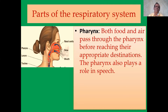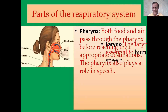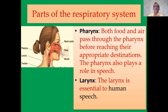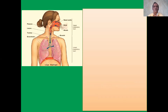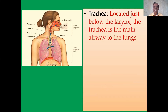The next part is the pharynx. Both food and air pass through the pharynx before reaching the appropriate destination. The pharynx also plays an important role in speech. The next part is the larynx — the larynx is essential to human speech. The vibrating vocal cords found in the larynx produce sound. Next, the trachea is located just below the larynx — the trachea is the main airway to the lungs.